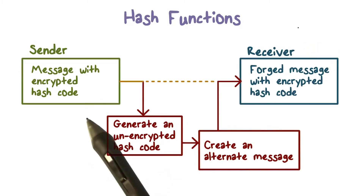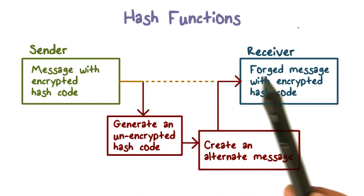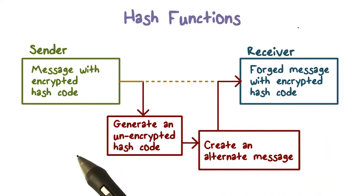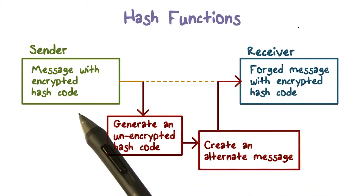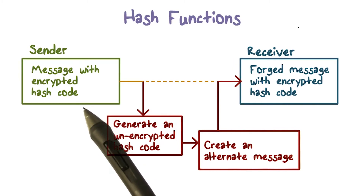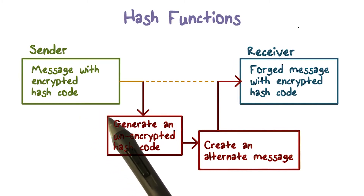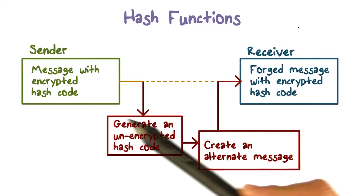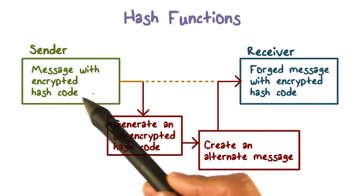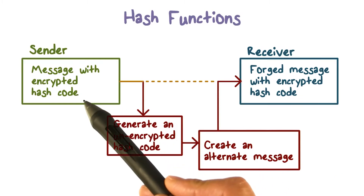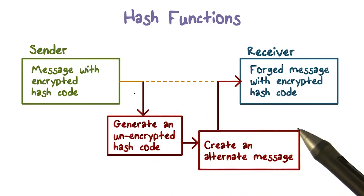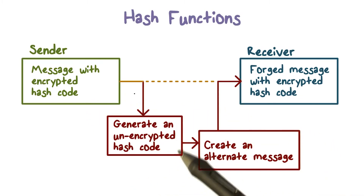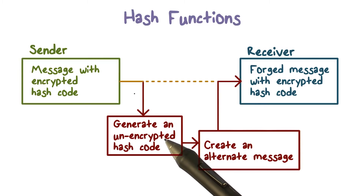Suppose when the sender sends a message to the receiver, he wants to ensure the integrity of the message. So the sender sends a message along with an encrypted hash code of the message. Now an attacker can intercept the message and the encrypted hash code that's being transmitted. Given the message, the attacker can also compute the hash code.